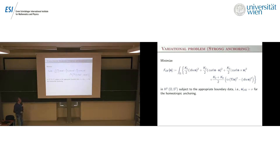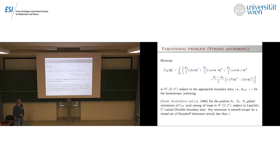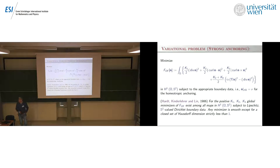We arrive at the Oseen-Frank variational problem: we integrate the energy density and impose appropriate boundary data. This problem was considered back in 1986 by Hardt, Kinderlehrer, and Lin, who determined that minimizers exist among all possible S²-valued maps in H¹.